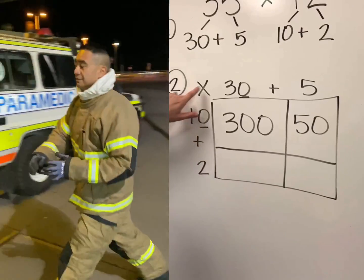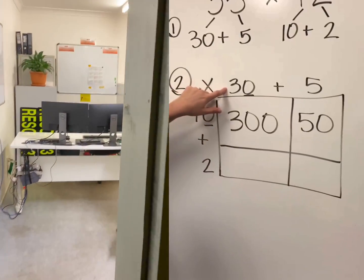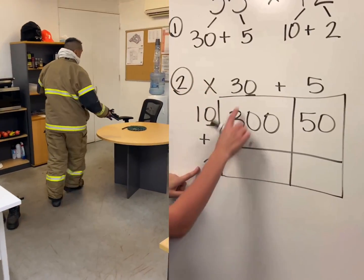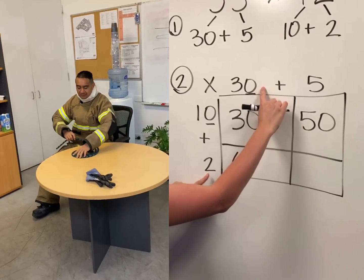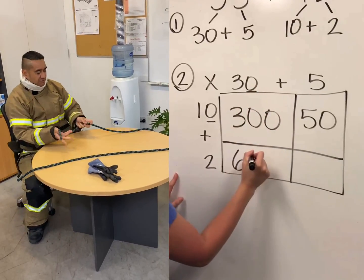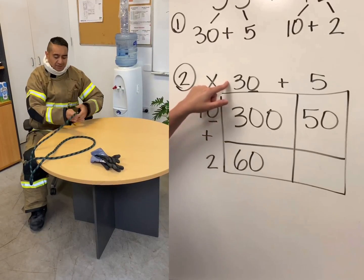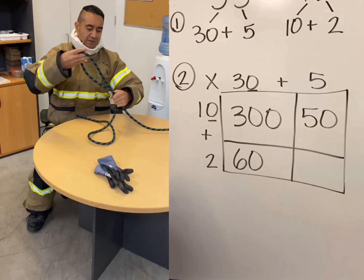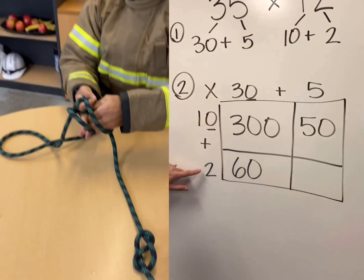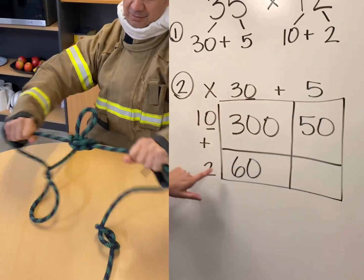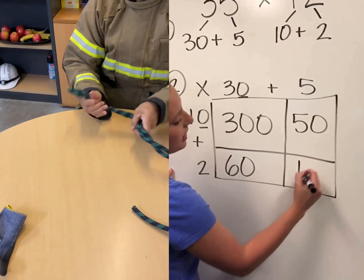2 times this, 2 times that. So 2 times 30 is 60. Then 2 times this, 2 times that — now I'm going to do 2 times 5. 2 times 5 is 10.